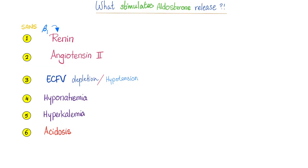What stimulates aldosterone release? Sympathetic stimulation via the renin-angiotensin-aldosterone system, volume depletion or hypotension — because if you're bleeding, reabsorbing salt and water increases blood volume and blood pressure. Also hyponatremia, because aldosterone's job is to reabsorb more sodium. Conversely, hyperkalemia and acidosis stimulate aldosterone, because aldosterone's job is to secrete potassium and secrete protons in the urine.